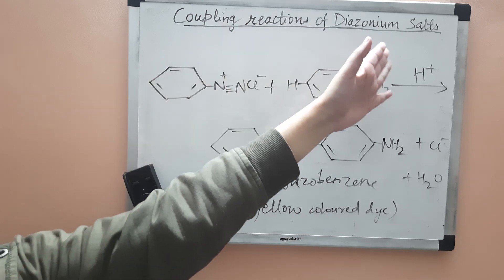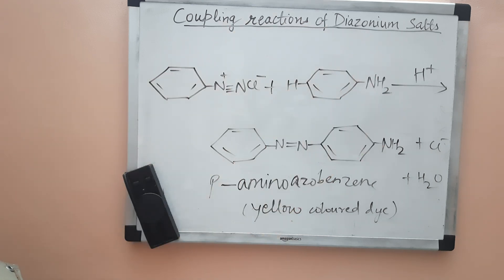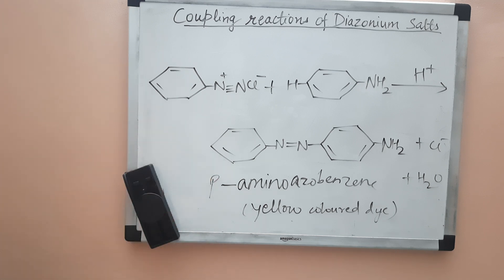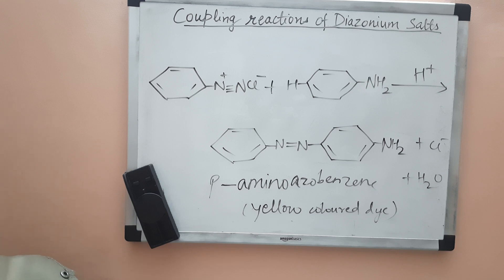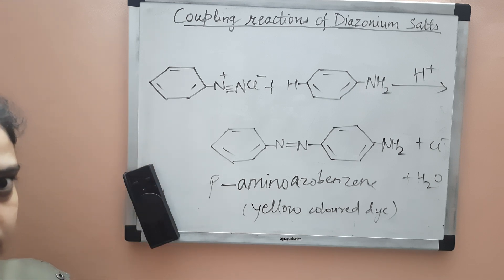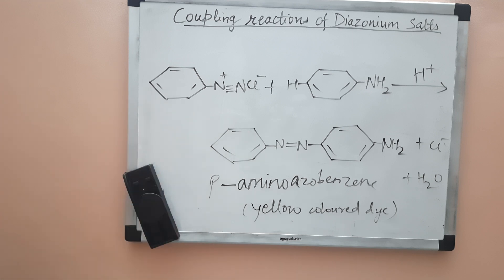The importance of diazonium salts is that when you cannot directly substitute halogens, cyano groups, hydroxy groups, or nitro groups into an aromatic ring like benzene, you can react your compound with the diazonium salt and introduce these groups into the ring. Through nucleophilic substitution or direct halogenation it is difficult to introduce iodide or fluoride into the ring, but through diazonium salts it can be done.